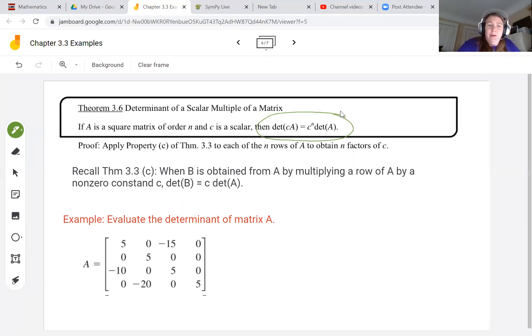Remember back to theorem 3.3 part C. That was when B is obtained from A by multiplying a row of A by a non-zero constant C.